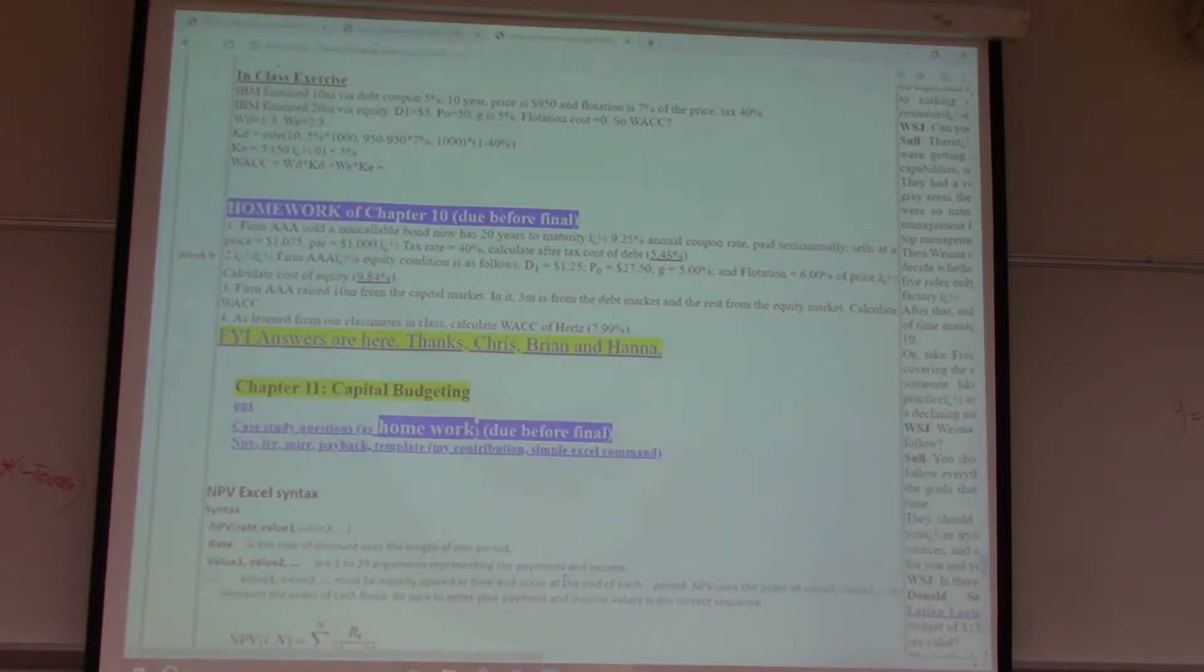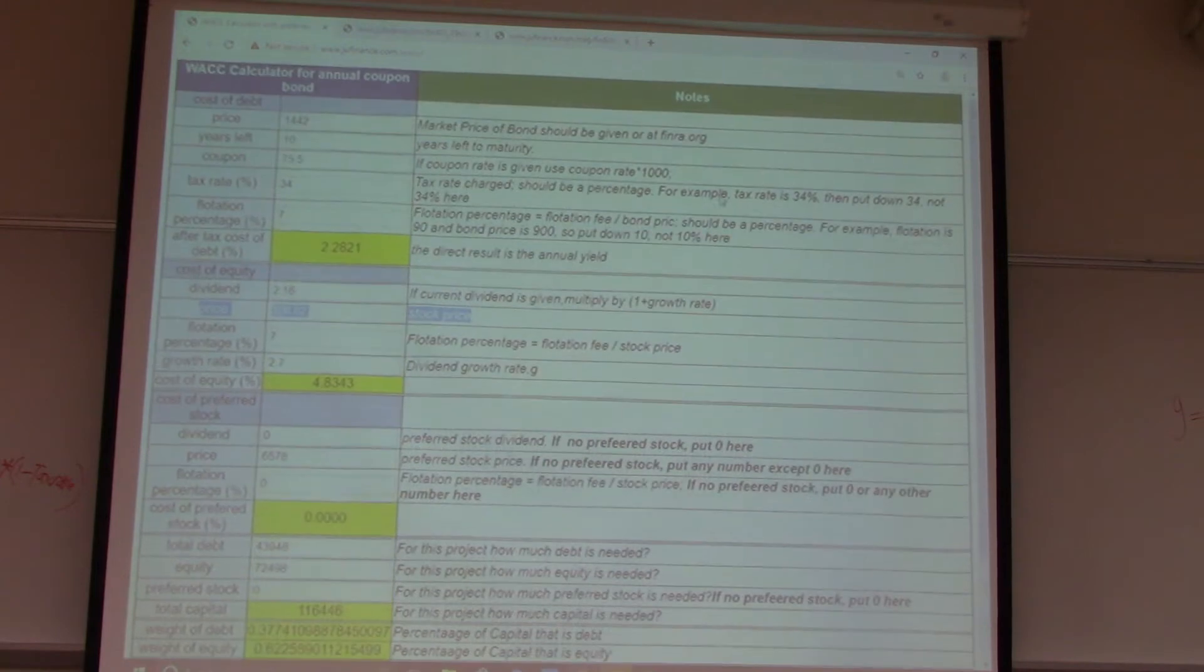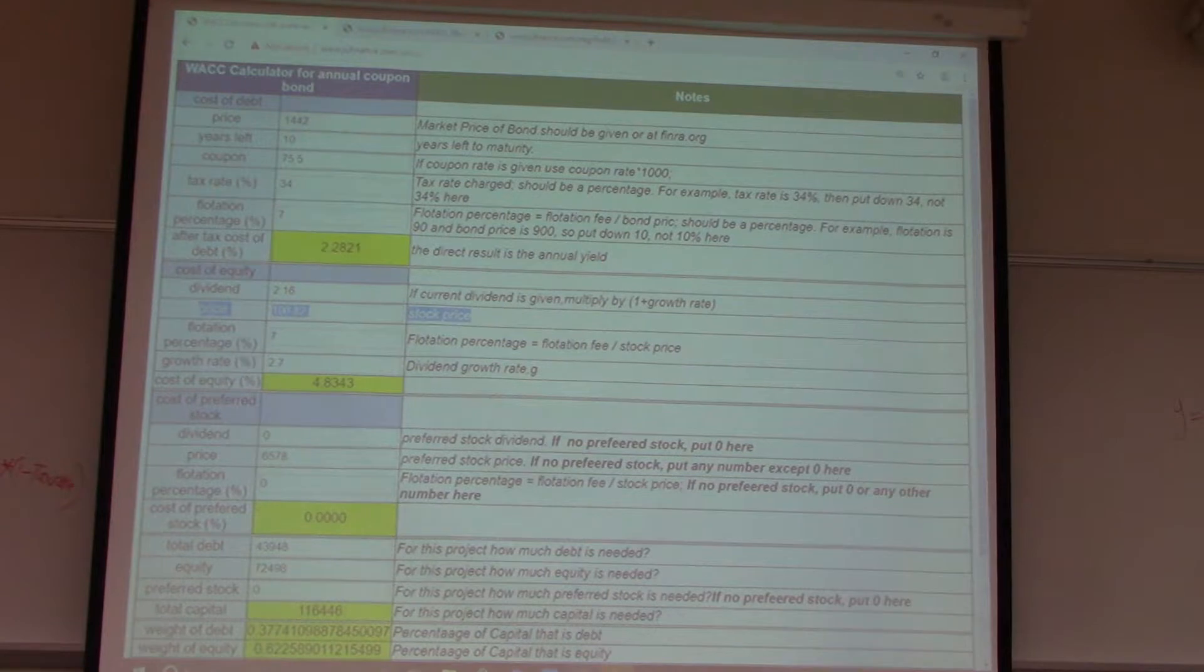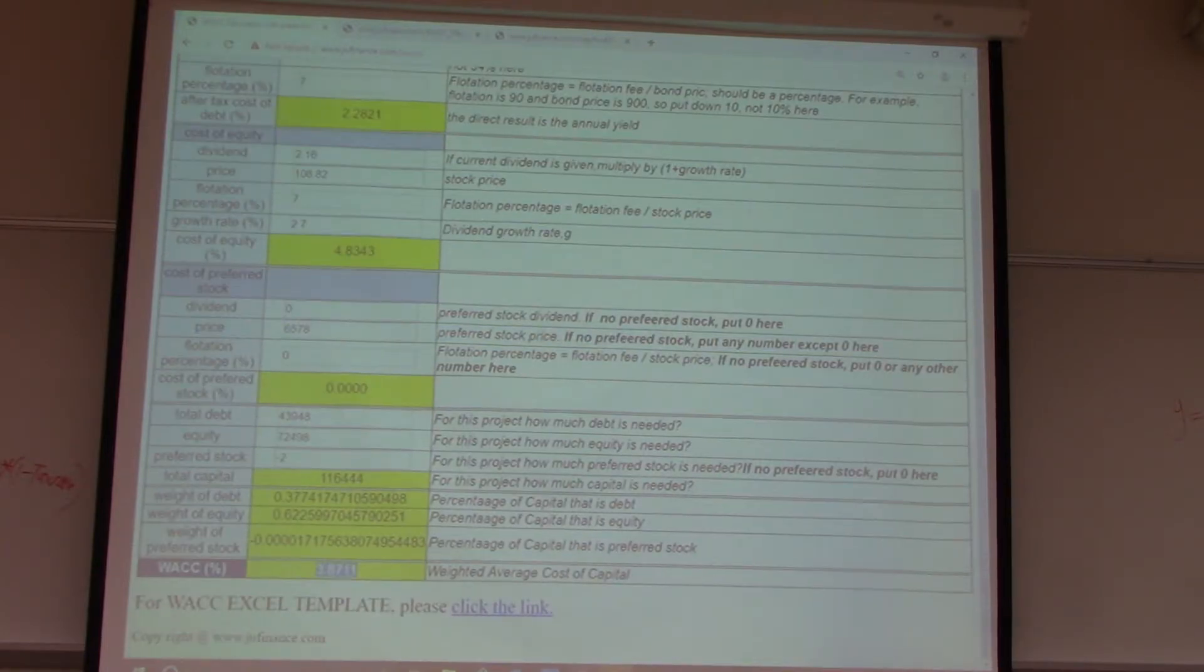So if you use this calculator, there's another component for WACC, it's called preferred stock. But since in our chapter we're not considering preferred stock, you can just put, if you use this calculator, you just put dividend for zero and anything else you can figure it out with any numbers. If you put zero for dividend, NIA will just give cost of preferred stock for a value of zero. For the amount of preferred stock, you just put zero here. NIA will calculate it and give you the answer. Here is a template in Excel. If you want the Excel template, you can open it and use it.